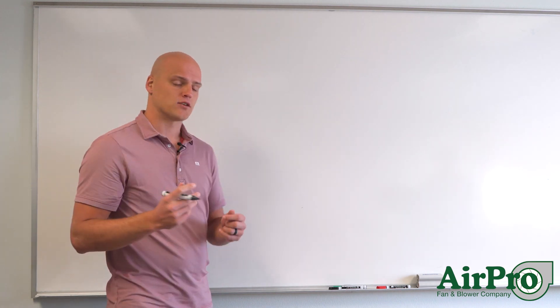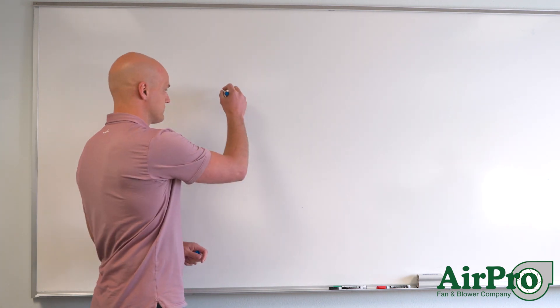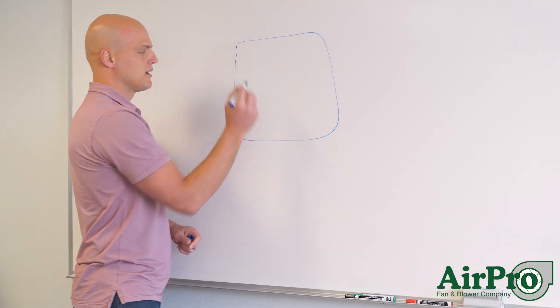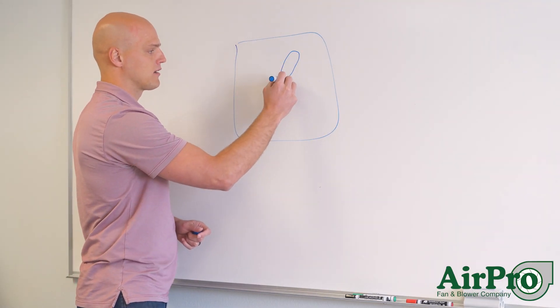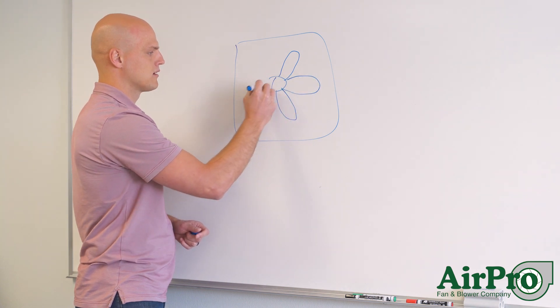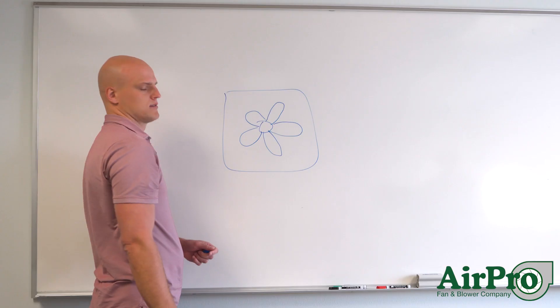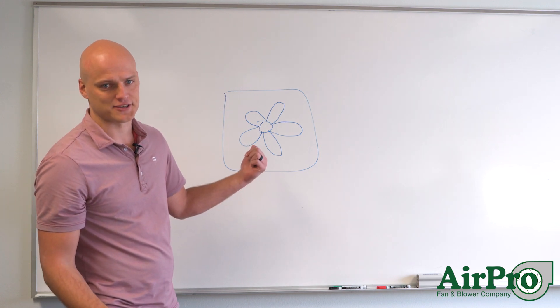an axial fan looks like. So if you've seen a window fan, it's like a box and inside it you have a fan with blades. This is an axial fan.